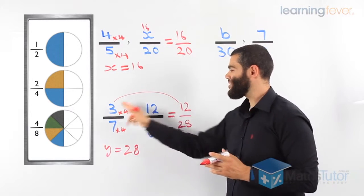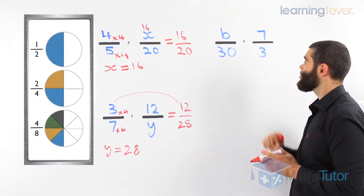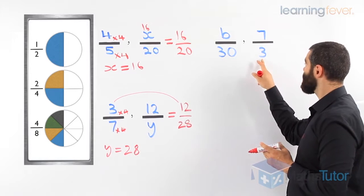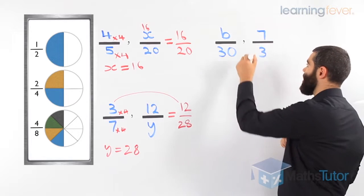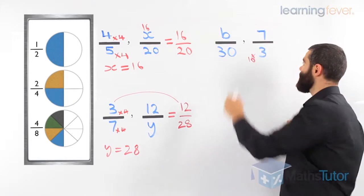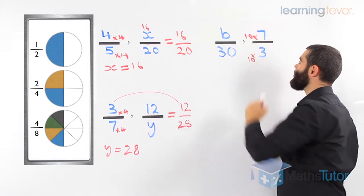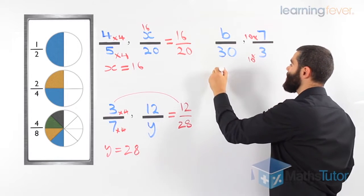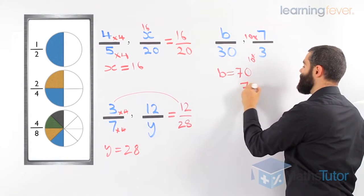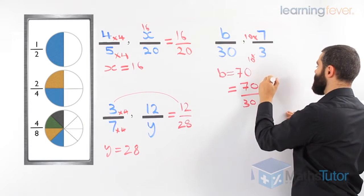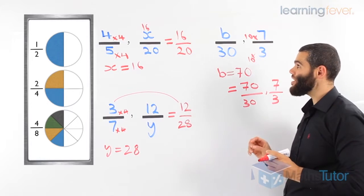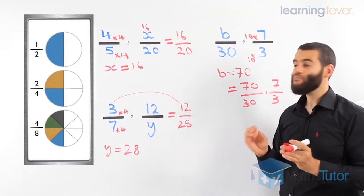Once again, we have two equivalent fractions, and we are asked to find b. We need to ask: how do we get from three to 30? Three to 30 is times 10. Whatever we do to the denominator, we must do to the numerator. Seven times 10 is 70, so b must be 70. That means b over 30 is really 70 over 30, which is equivalent to 7 over 3. They are written differently, but they have the same value.